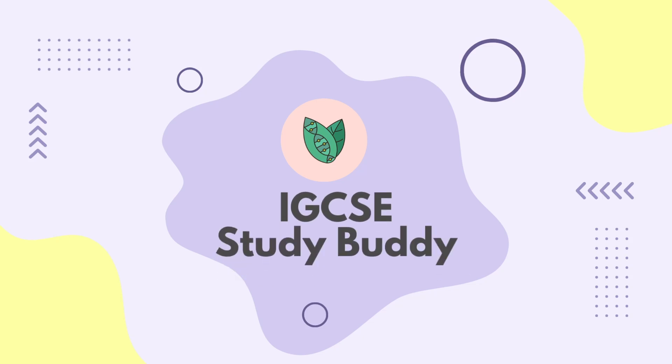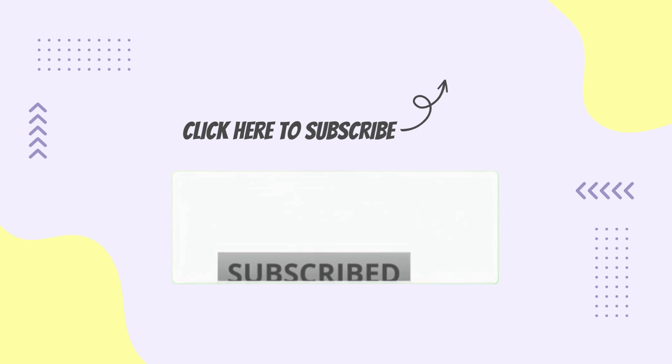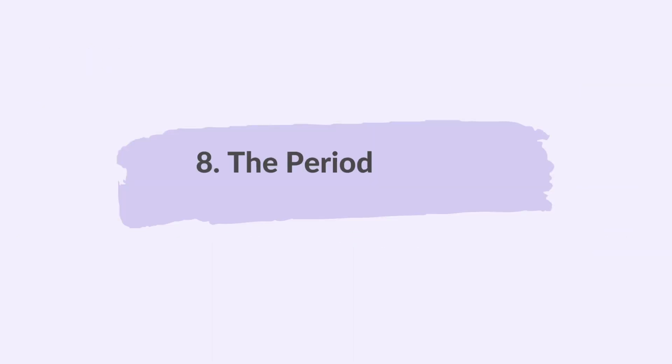Hi everyone, welcome to IGCSE Study Buddy, where you can revise chemistry topics from the Cambridge IGCSE syllabus. If you are enjoying our videos so far, please don't forget to hit the like button and subscribe to our channel. In this video, you are going to learn part 1 of topic 8, the periodic table.